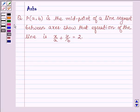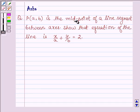Hello and welcome to the session. Let us solve the following problem which says P(A,B) is the midpoint of a line segment between axes. Show that the equation of the line is X upon A plus Y upon B equals 2.